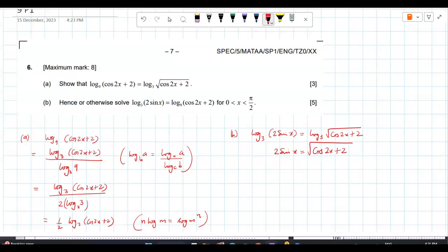Now, what do you do? Square both the sides. Yeah. You square both the sides because there is a square root, na? So, let me square both the sides. If you square both the sides, 4 sin square x is equal to cos 2x plus 2.